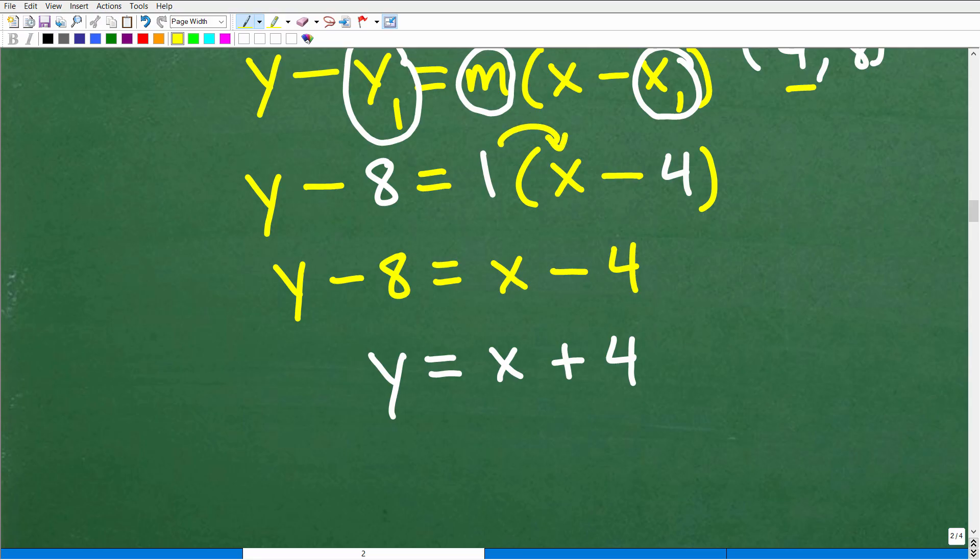So what you wanna do is just apply the distributive property. So that's gonna be 1 times x, which is x, and that's gonna be 1 times that 4, negative 4. So that's negative 4. So you have y minus 8 is equal to x minus 4. So what we need to do to solve for y is simply add 8 to both sides of the equation. So we have negative 4 plus 8, which, of course, is a positive 4. And this is our final answer.